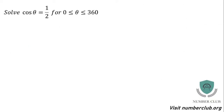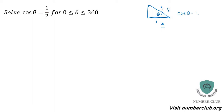So, we've got to solve cos of theta equals 1 half, for theta between 0 and 360 degrees. You'll have seen this before at GCSE or even earlier, where you've got an angle theta with an adjacent side of 1 and a hypotenuse of 2, so cos of theta equals 1 over 2.